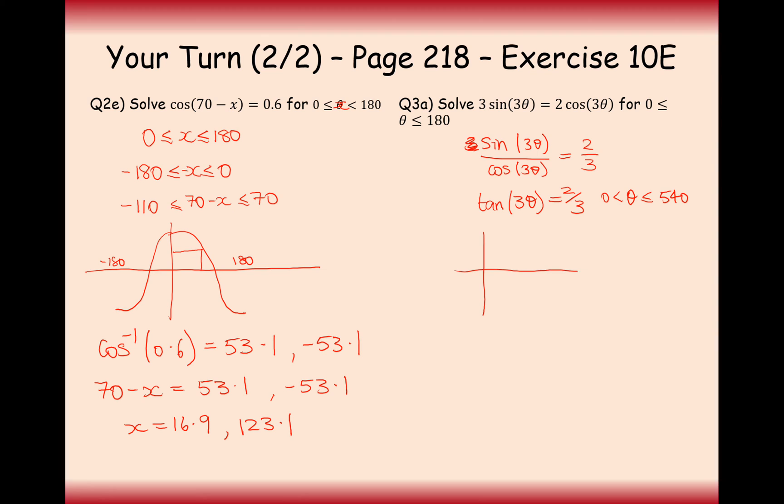Now what we do is we draw the tan graph out to 540. That will be at 90. The next squiggle will be at 270. Add on 180 from there and we'll get 450. Add another squiggle there. And this point here is going to be the 540 marker. What we need to do now is work out what tan inverse of 2 thirds is to get our first solution. This is going to be 3θ equals tan inverse of 2 thirds. Let's get your calculator out. Tan inverse, 2 divided by 3 equals 33.7.